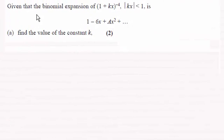Hi there. Now for this question we're given that the binomial expansion of (1+kx)^(-4) where the mod of kx is less than 1 is 1-6x+ax²+... and we're asked to find the value of the constant k.